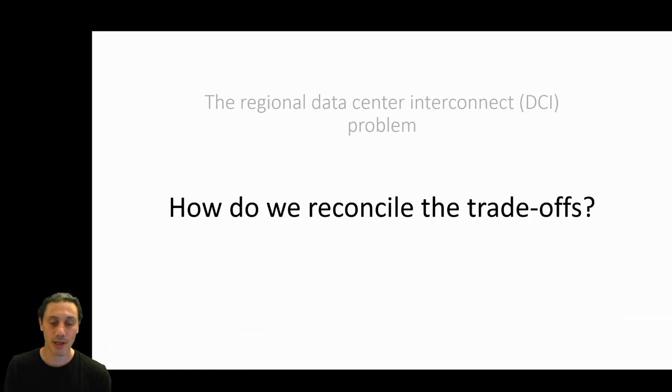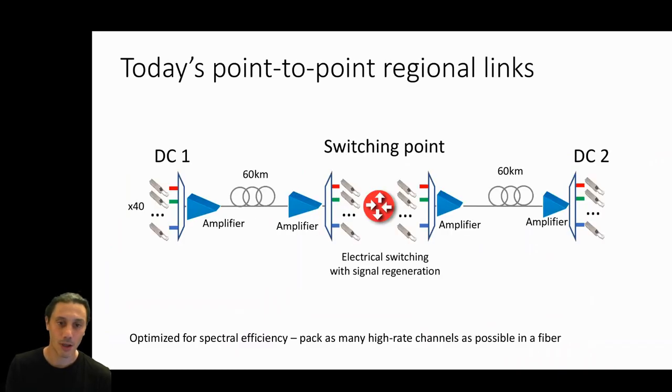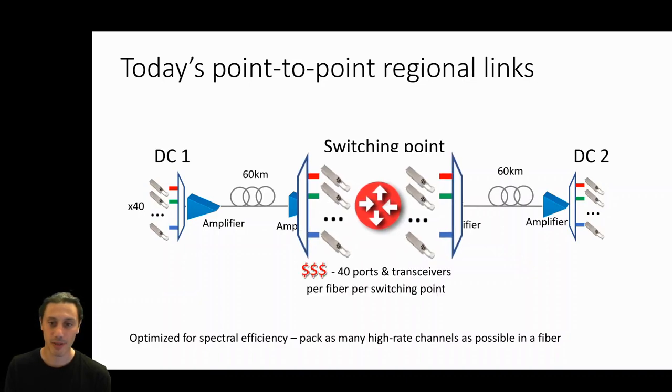So how can we reconcile this trade-off? Looking at today's physical connectivity in the region, it follows the typical point-to-point optical links. A number of transceivers at each end of the fiber link perform optical-to-electrical-to-optical conversions and are packed into single-mode fibers. The biggest contributor to the cost in DCI is the number of ports and transceivers per fiber. In all, assuming 40 channels per fiber, as is typically the case in DCI today, we would need 40 ports and transceivers per fiber end per switching point. This results in a quadratic increase of the cost and complexity as the topology becomes more and more distributed.